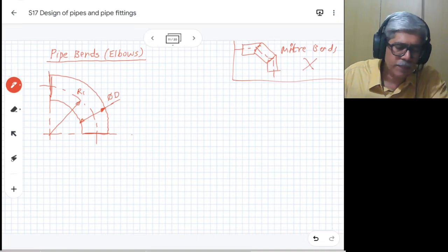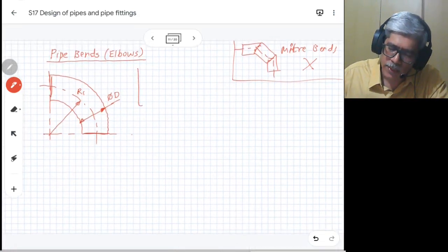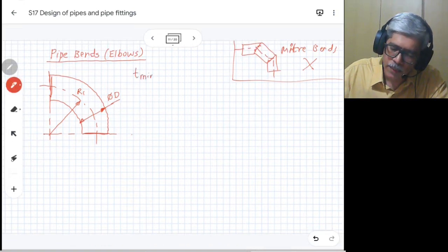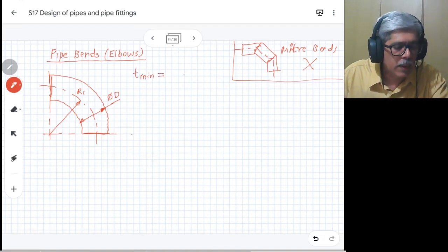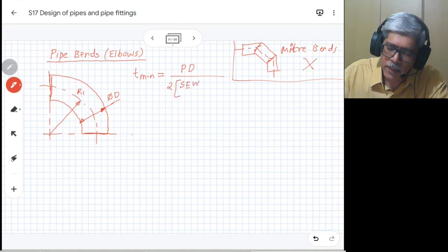The minimum thickness for this type is given as: t minimum equals P times D divided by 2 times S times E times W, divided by I plus P times capital Y.